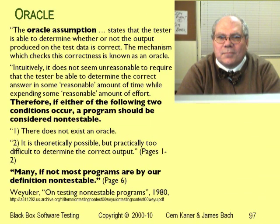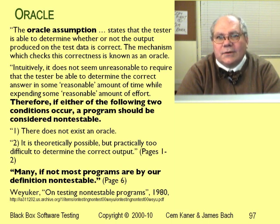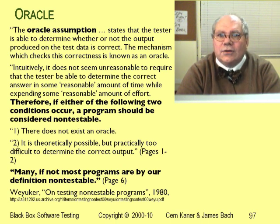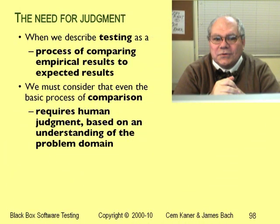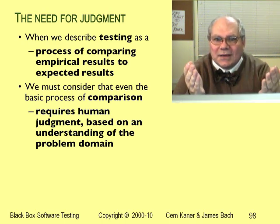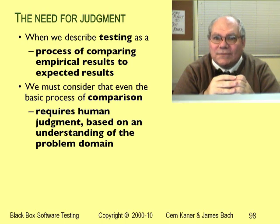Elaine Weyuker published a brilliant paper in 1980 that demonstrated that in most cases traditional oracles simply don't exist. She then described examples of what people actually use instead — what we'll call heuristic oracles. The problem is that when we use a mechanism to check the correctness of a test result, there's no guarantee it's going to be correct. When we compare a test result to an expected result, we have to make a judgment, and our judgment is fallible.